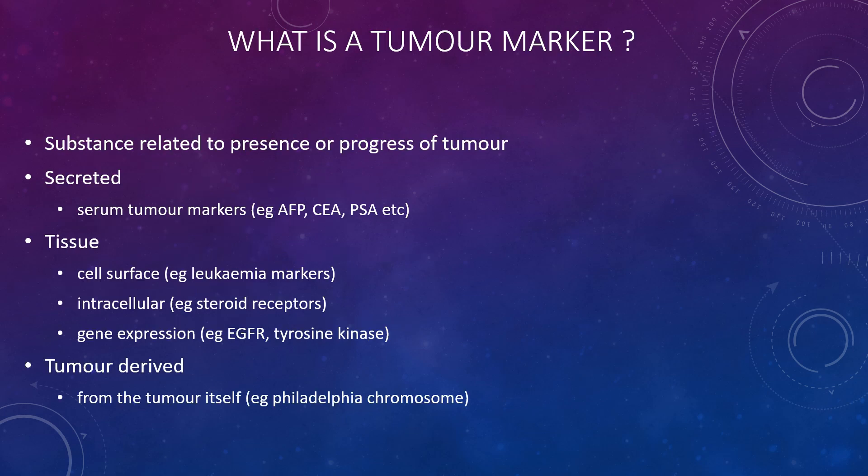What is a tumour marker? A tumour marker is a substance related to the presence or progress of a tumour — it is secreted by the tumour or in response to it. There are serum tumour markers such as alpha-fetoprotein, CEA, and PSA.